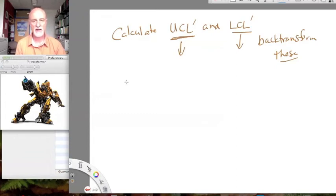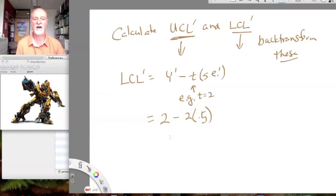So, we have a lower confidence limit of the transformed mean minus T times the transformed standard error. And I'm just going to, for example, let's say we have a pretty large sample size and T equals 2. I'm just making the numbers nice and easy here. Keep it simple, stupid. So, we have our transformed mean of 2 minus 2 times our transformed standard error of 0.5. So, that's 2 minus 1 or 1.